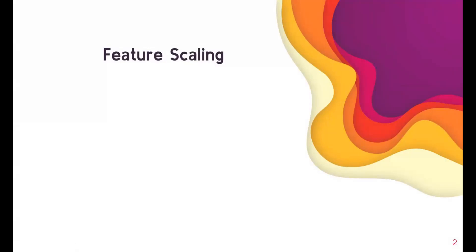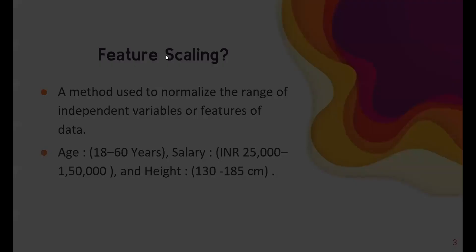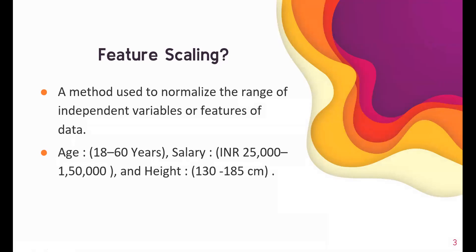To understand what standardization and normalization are, let's first look at feature scaling. Feature scaling is a method used to normalize the range of independent variables. Consider variables like age, salary, and height. Each has a magnitude and a unit — for example, 18 to 60 years, 25,000 to 150,000 INR, and 130 to 185 centimeters.